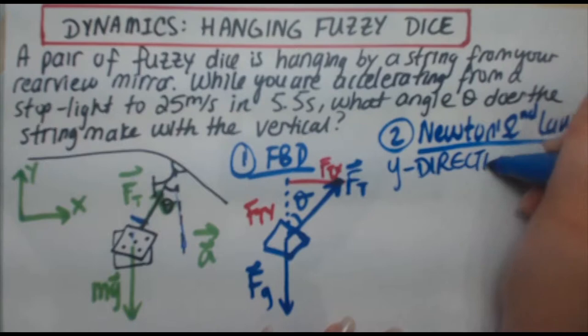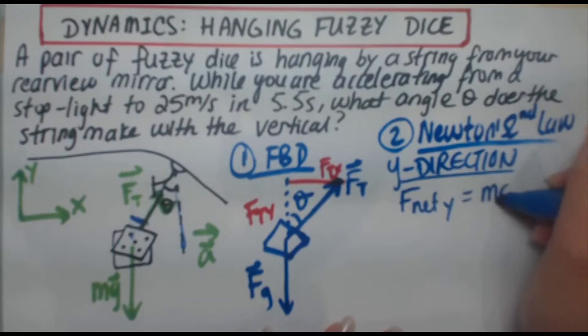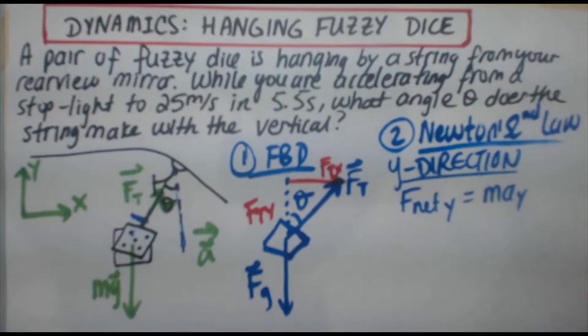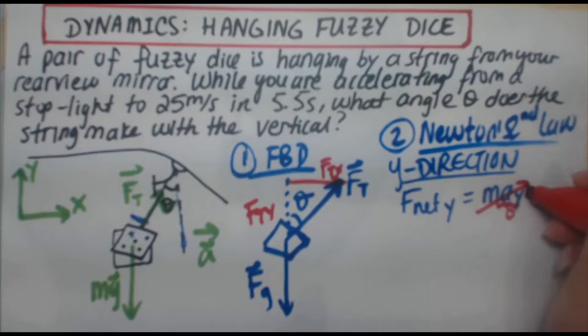So I'm going to start with Newton's second law in the y direction. F net y equals m a y. And the first thing I think of is, is the object in this question accelerating up or down vertically? And the answer is no, it's not. So that means my acceleration is zero and zero times any number is zero. So this entire expression on the right disappears.